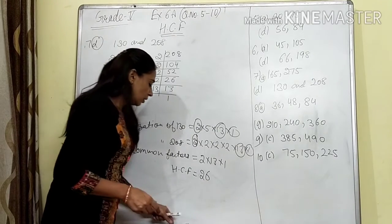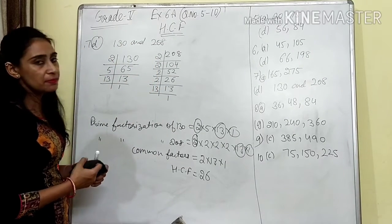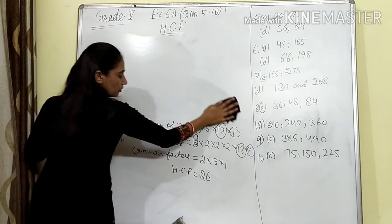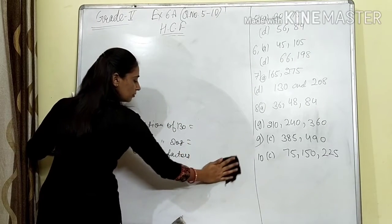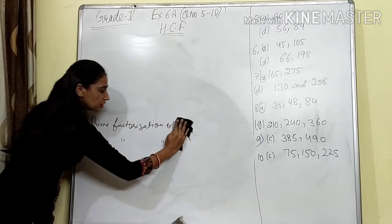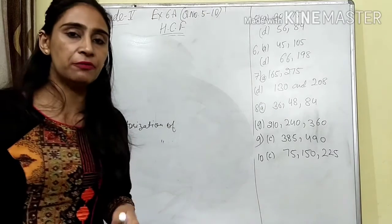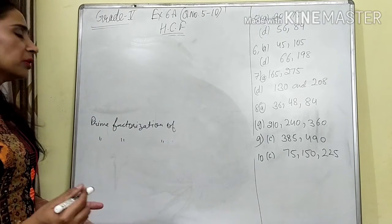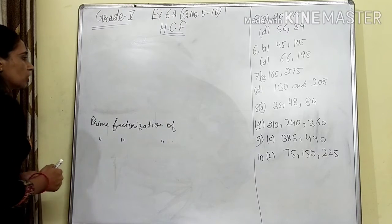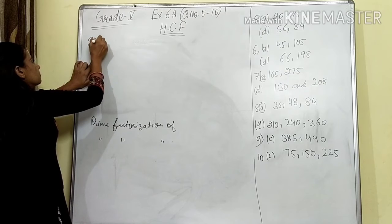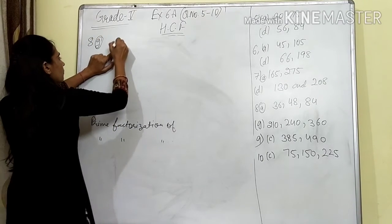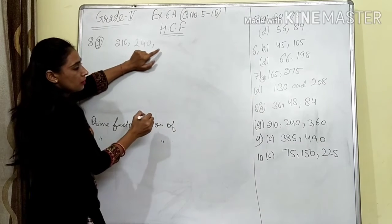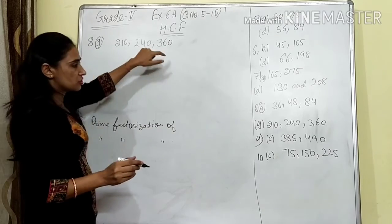Now we will do question number 8, G part. In question number 8, G part, they have given us 3 numbers. So we will do the prime factorization of all 3 numbers, then make the common pairs from those 3 numbers, and after that multiply the common factors. The numbers given are 210, 240, and 360.